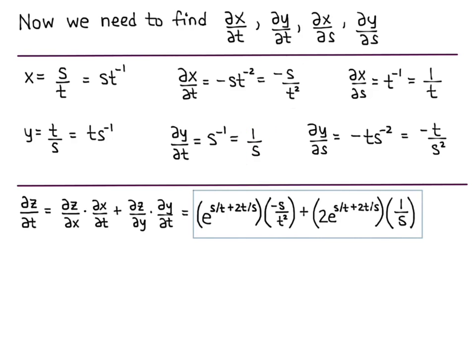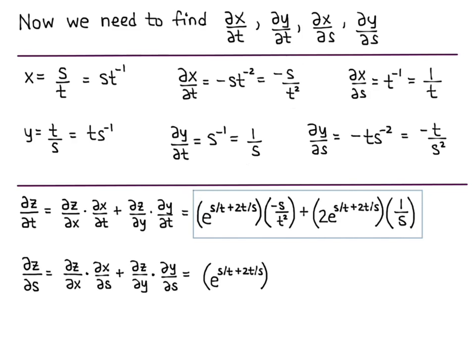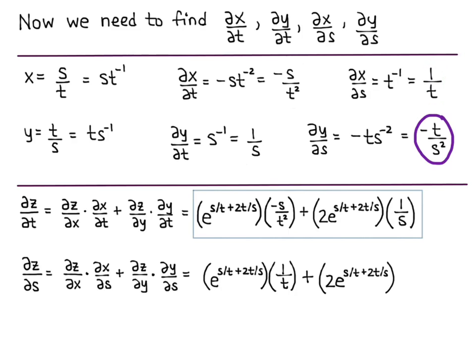Now we want partial z partial s. This equals partial z partial x times partial x partial s plus partial z partial y times partial y partial s. So, we have e to the s over t plus 2t over s times 1 over t, plus 2e to the s over t plus 2t over s times negative t over s squared.